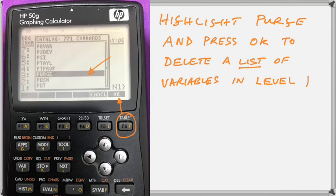When you've reached one that you want to select, you can then press the OK button. So as you can see, we've scrolled down until the word PURGE is highlighted, and we have pressed the soft key associated with OK on the right. And we have deleted a whole list of variables in level one at one go. You can't see the list entirely, but you can see the rightmost brace above the OK, along with N1.